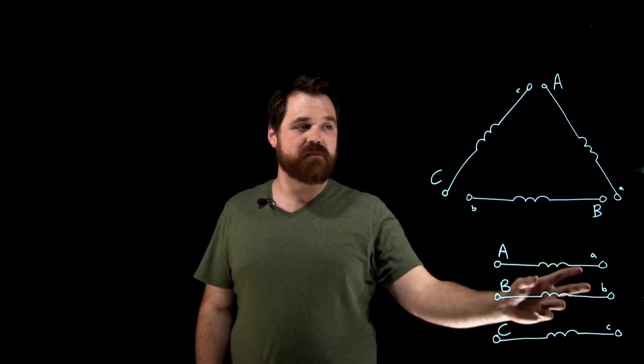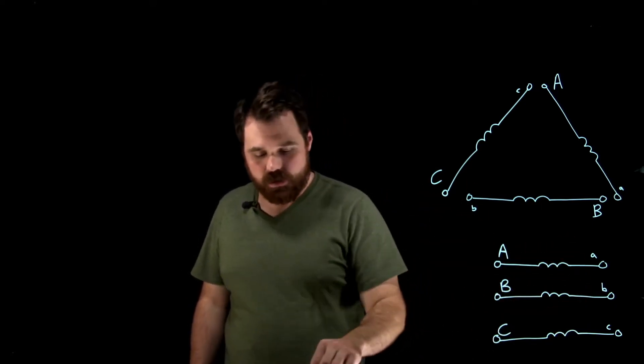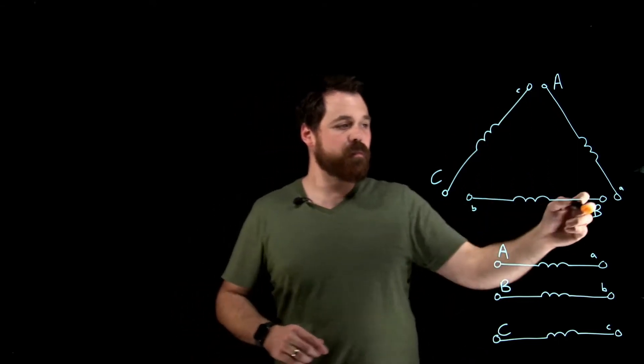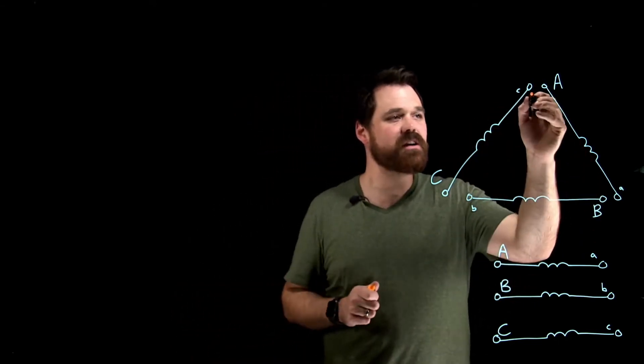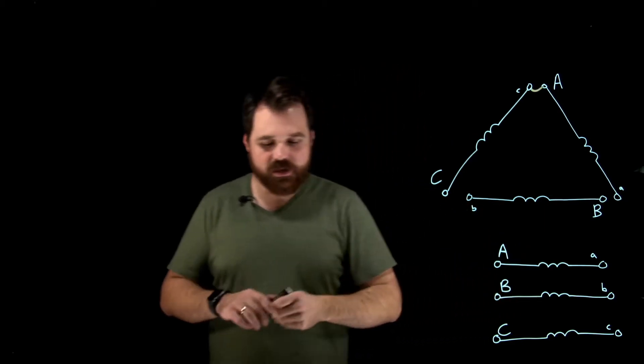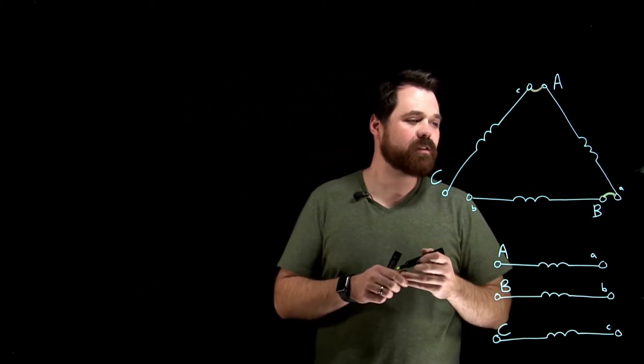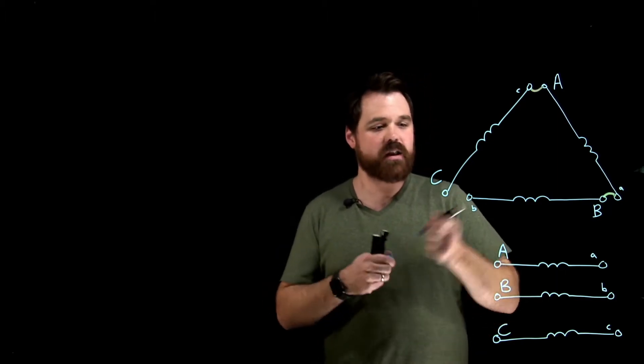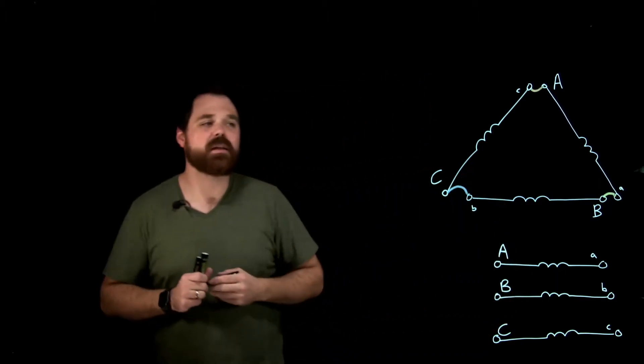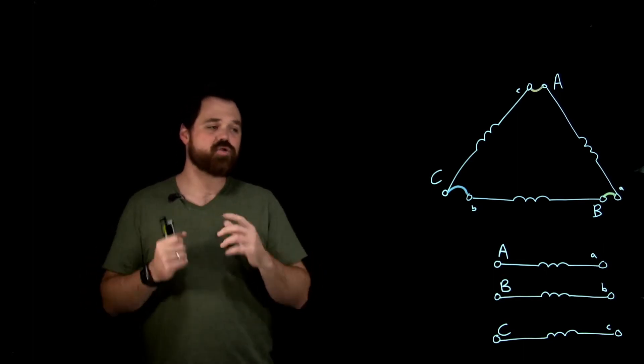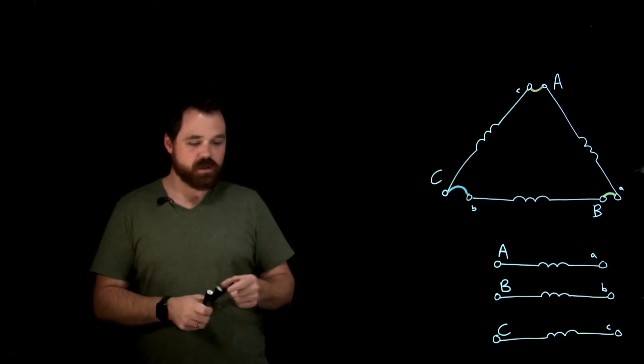So we have three windings, A phase, B phase, and C phase. What we kind of do is we connect big A to little C on the A, big B to little A down here, and then little B to big C there. So we end up connecting them into that triangle or that delta formation.